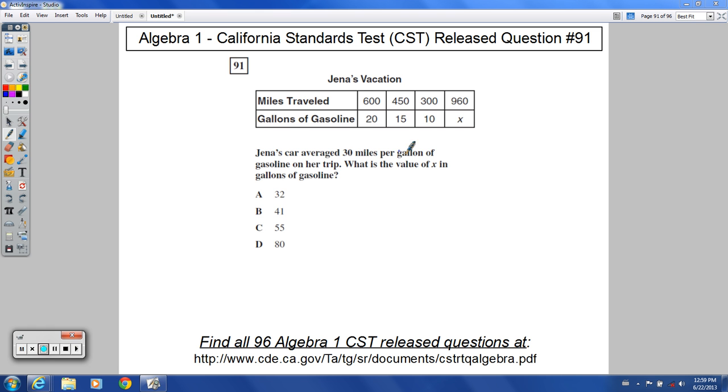So Jenna's car averaged 30 miles per gallon of gasoline on her trip. If I divide 600 by 20, I get 30. If I divide 450 by 15, I get 30. If I divide 300 by 10, I get 30. So yes, a linear relationship.